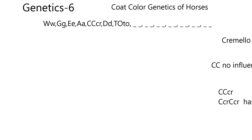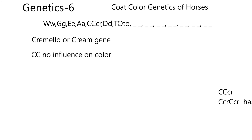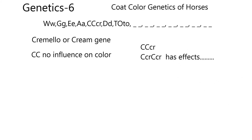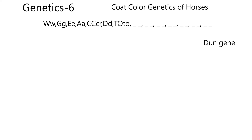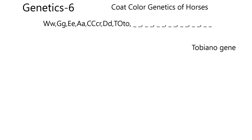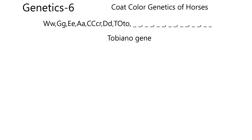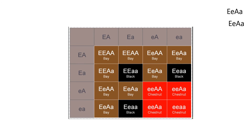Moving quickly through the other loci: the cremello or cream gene at the C locus — if C/C (homozygous dominant), that locus has no influence on color, but the other two genotypes do have effects. The D locus — with one large D and one small d — is called the dun gene. Then there's the tobiano gene locus, which I'll just introduce here.